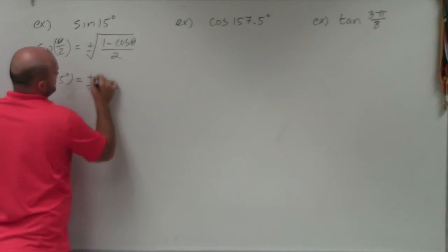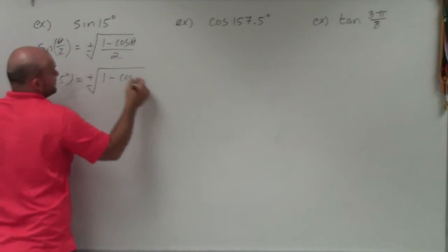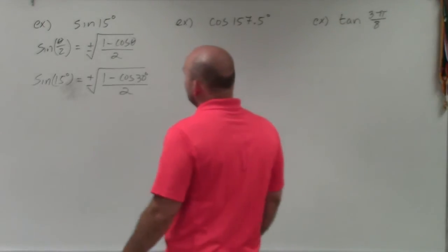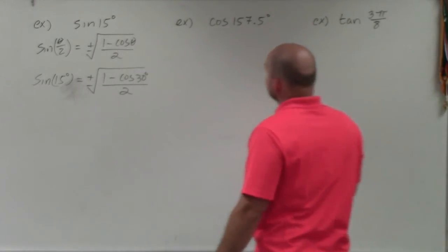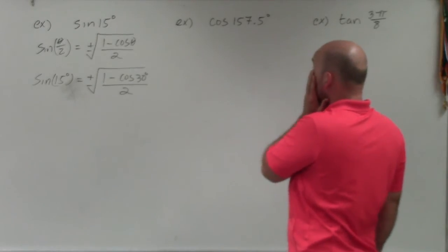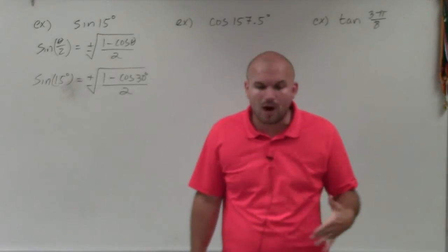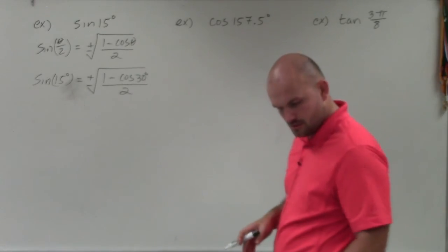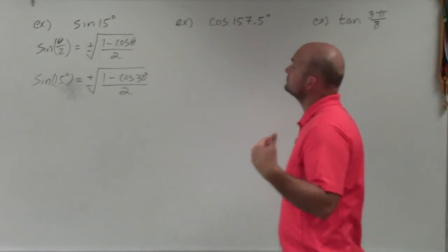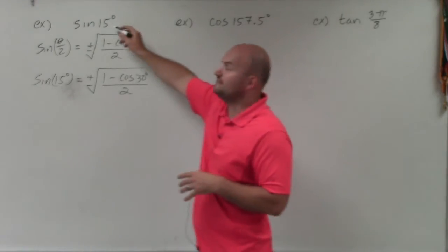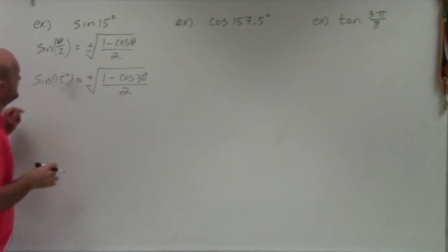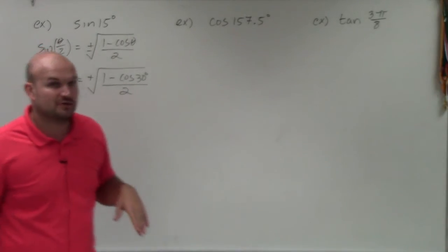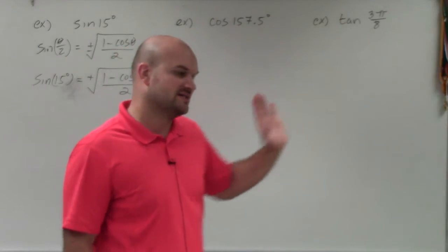So that's going to be plus or minus the square root of 1 minus cosine of 30 degrees, divided by 2. Now we need to determine what quadrant this trigonometric function is in. 15 degrees is in the first quadrant, and sine is positive in the first quadrant, so we're not going to use the negative — we know our answer is going to be positive. Cosine of 30 degrees from the unit circle is the square root of 3 over 2.